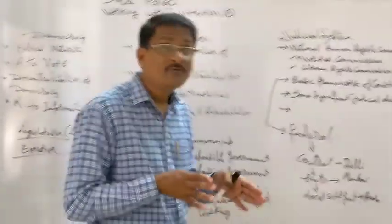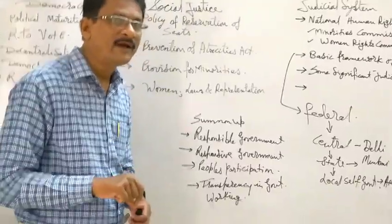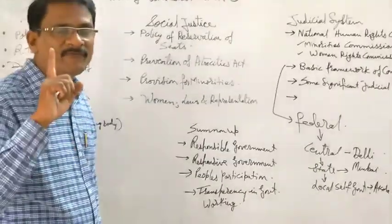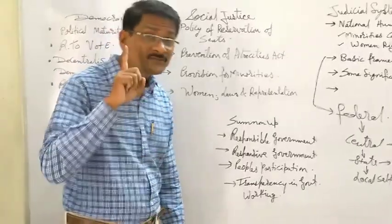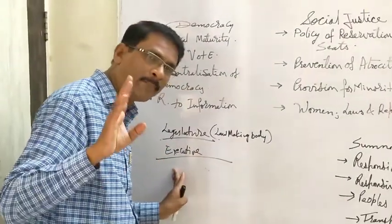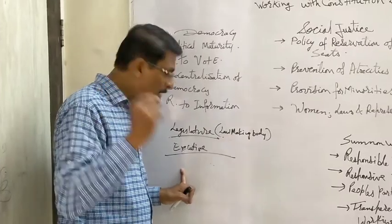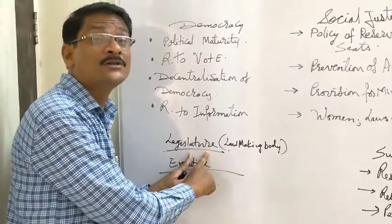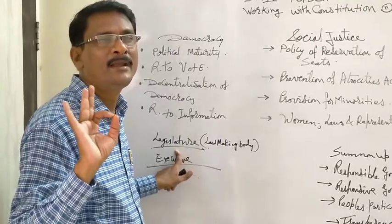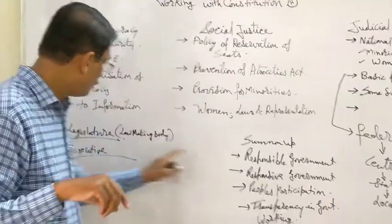While working with the Constitution, we have to consider certain things. One is responsible government. Government of India at the national, state, and local level is responsible — if the Prime Minister resigns, the whole ministry resigns; if the Chief Minister resigns, the whole ministry resigns. During parliamentary sessions in Lok Sabha and Rajya Sabha, questions are asked, and while answering, the minister cannot give his own answers — he has to pinpoint the perfect truth. That is why the government is responsible to the legislature.